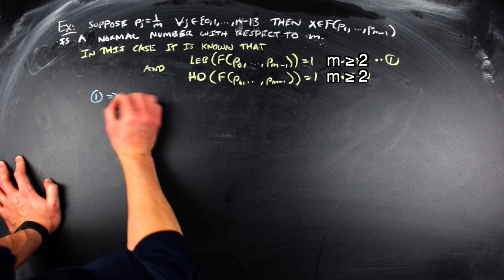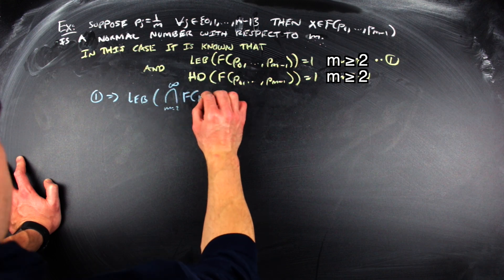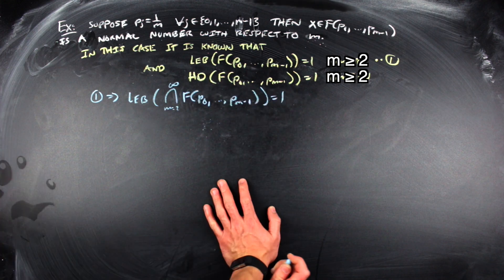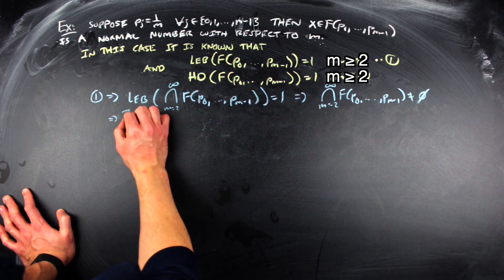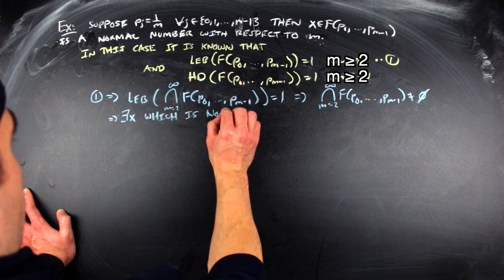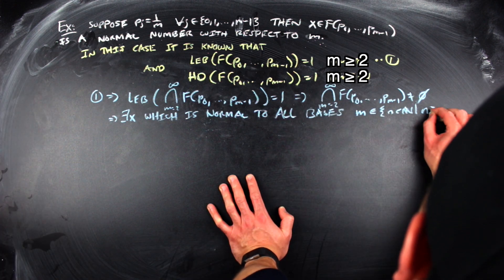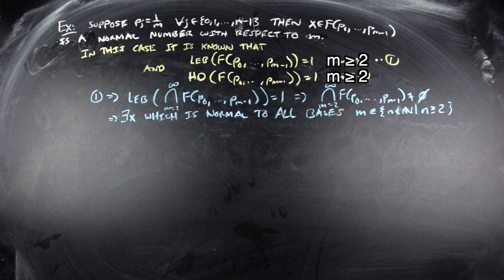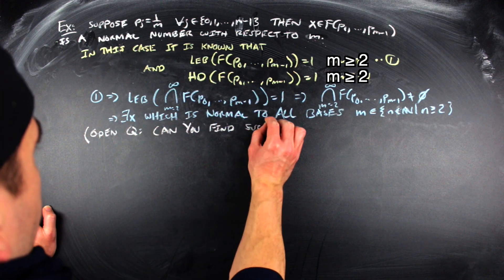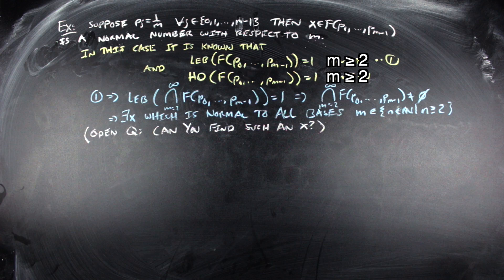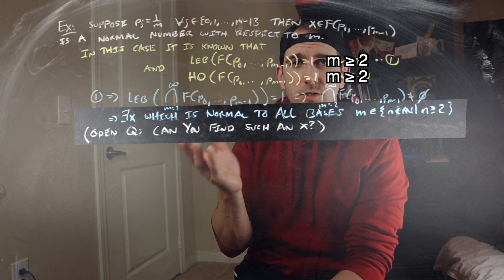And there's two cool things that are happening here. So the first thing is the Lebesgue measure stuff. Since each one of these normal number sets with respect to a particular base m is full measure, or measure 1 in the unit interval, then the intersection of all of them is also going to be full measure in the unit interval. So in particular, there has to be an x in the unit interval that is normal with respect to all bases. And that's a thing that should feel false in your brain, but it's true.